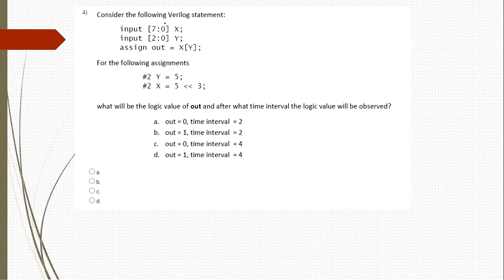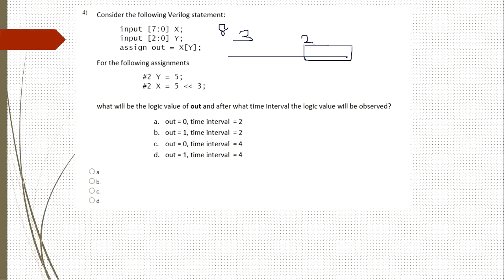The fourth question considers the Verilog statements: input X [7:0], input Y [2:0], and assign out = X[Y]. X is an 8-bit variable, Y is a 3-bit variable. X[Y] means out of the 8 bits of X, we take only bits 2 to 0 — those 3 bits are assigned to output. After 2 time units, Y becomes 5, and after another 2 time units (total 4), value 5 is assigned to X with a logical left shift.